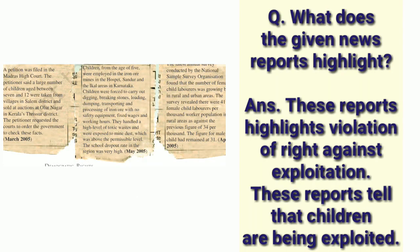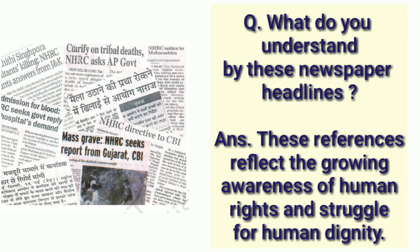Next picture-based question: what does the given news report highlight? You can see newspaper reports in the picture. Answer: these reports highlight the violation of the right against exploitation. These reports tell that children are being exploited. You can see in your books and read the newspaper reports clearly — all three reports tell of the exploitation of small children by appointing them to different types of work.